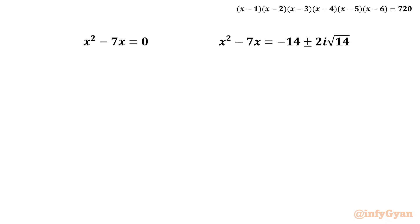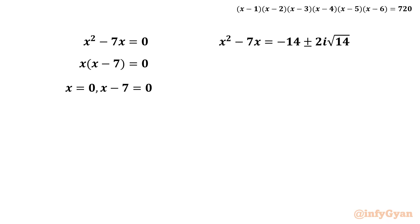Let's solve the first equation. Taking x as a common factor: x(x − 7) = 0. By the zero-product rule, x = 0 or x − 7 = 0, giving our two real values: x = 0 and x = 7.